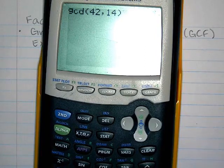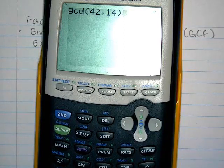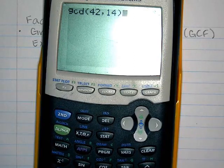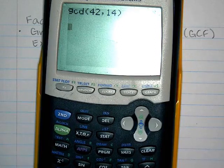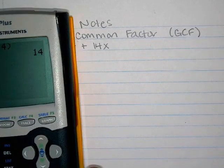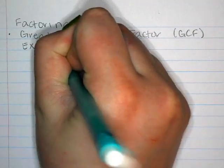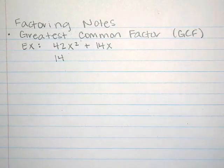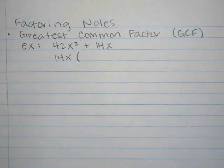You only need to do this if you're brain-farting. If you look at those numbers and know what's in common, you don't need the calculator. A lot of people might think 7 is in common between 42 and 14, but it's actually 14. So the calculator can help you out there. The GCF is 14 — but it's not just 14.